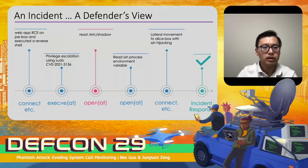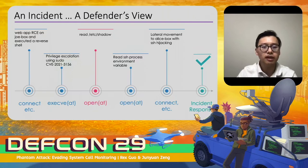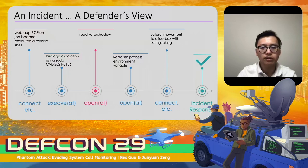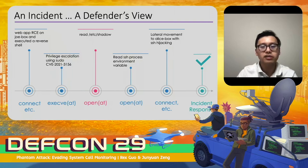For example, when the attacker launches the reverse shell, there will be a connect system call, and there may be additional system calls depending on the reverse shell used. This is similar for other activities. Through this talk, we are going to use the OpenAt system call as an example to look at how system calls and process information can detect an attacker reading /etc/shadow.